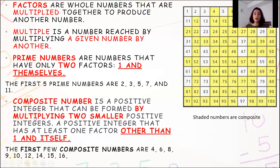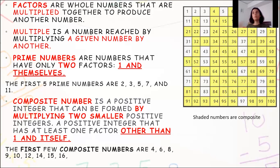For composite numbers: a composite number is a positive integer that can be formed by multiplying two smaller positive integers. It has at least one factor other than 1 and itself. For example, if we take the number 4: 1 into 4 gives you 4, but 2 into 2 also gives you 4. So the factors of 4 are 1, 2, and 4. So 4 is a composite number because it has factors other than 1 and 4 itself — its other factor is 2.